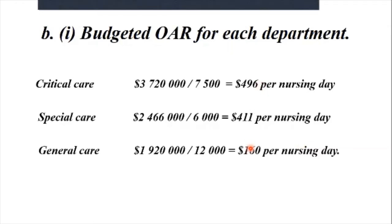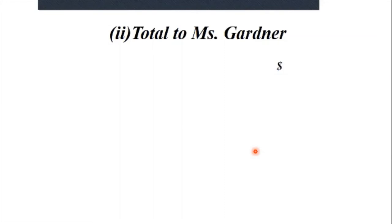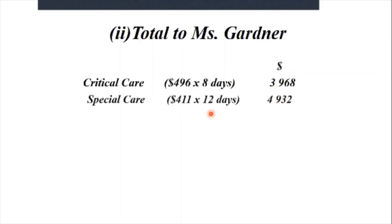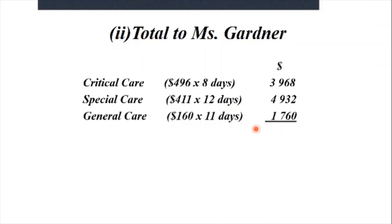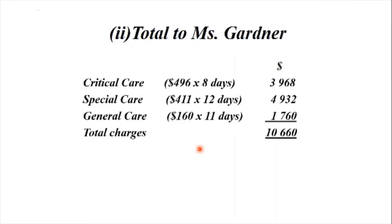Using these rates to calculate the bill for Ms. Gardner: critical care — $496 × 8 days = $3,968; special care — $411 × 12 days = $4,932; general care — $160 × 11 days = $1,760. The total charges to Ms. Gardner would be $10,660. That brings us to the end of this presentation.